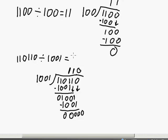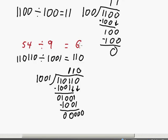So 110110 divided by 1001 is equal to 110. Let's do a check by converting everything into decimal form: 110110 is equal to 54, and 1001 is equal to 9. Fifty-four divided by nine is six, and six is 110 in binary. Everything checks out. Hopefully those four examples give you a good idea of how to do binary division.